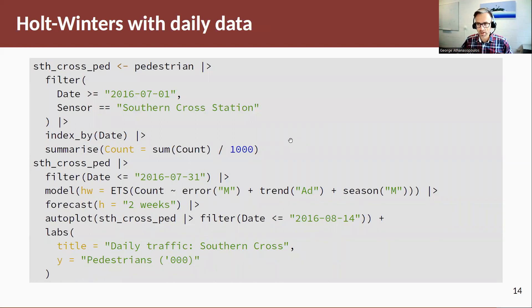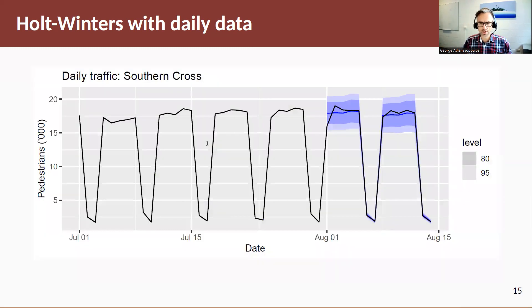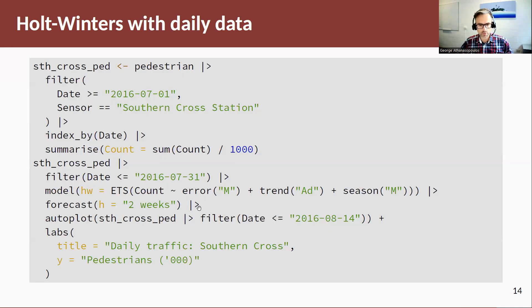Let's have a look at another example just for the application of this method. This is the pedestrian data for the sensors around Melbourne that count for the number of people that go through that sensor. We've pulled out the Southern Cross Station, which is a train station, a main train station in Melbourne. And let's have a look at, this is daily data. Let's have a look at some data and some forecasts. For this Holt-Winters damped trend multiplicative method, we're going to combine the error and the seasonal being M and now our trend component is an additive damped trend.